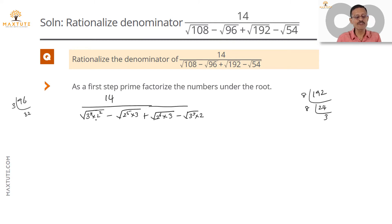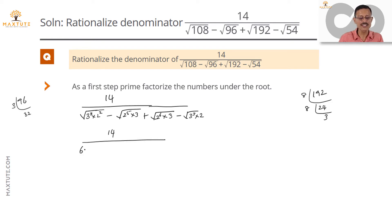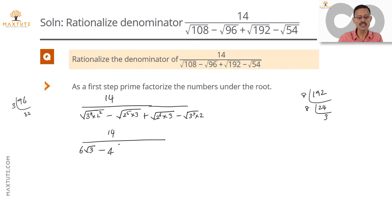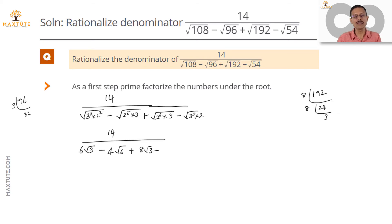Every time we find an even power, we will be able to take it out of the root. For 108 (3 cubed into 2 squared): 3 cubed can be written as 3 squared into 3, so 3 squared comes out as 3, and 2 squared comes out as 2 — giving us 6 root 3. For 96 (2 to the power 5 into 3): 2 to the power 5 splits as 2 to the power 4 into 2, and 2 to the power 4 comes out as 2 squared which is 4, leaving root 6 — so we get 4 root 6. For 192 (2 to the power 6 into 3): 2 to the power 6 comes out as 2 cubed, which is 8, leaving root 3 — so 8 root 3. For 54 (3 cubed into 2): the 3 squared in 3 cubed comes out as 3, leaving root of 2 into 3, which is root 6 — so that is 3 root 6.